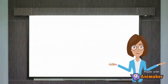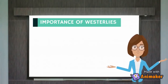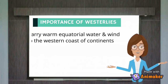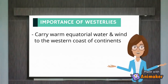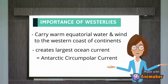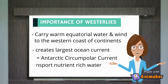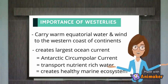Every natural phenomenon has its importance, and that includes Westerlies. Westerlies play an important role in carrying warm equatorial waters and winds to the western coasts of continents. Westerlies also impact the ocean by creating the largest ocean current in the world, called the Antarctic Circumpolar Current — responsible for transporting nutrient-rich water and creating healthy marine ecosystems and food webs.